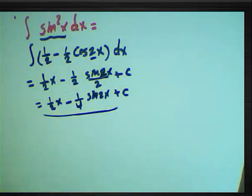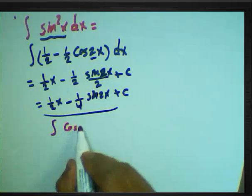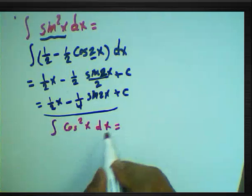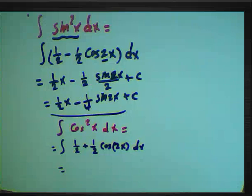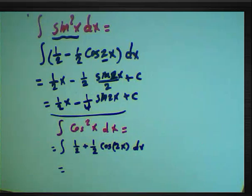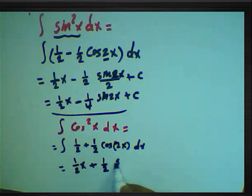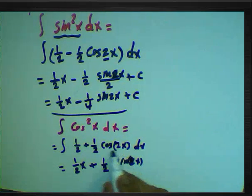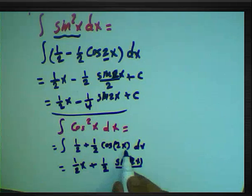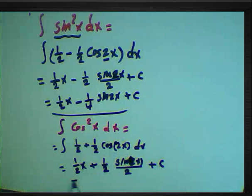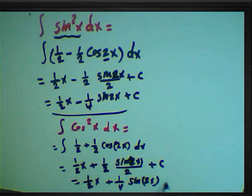What about this example: the integration of cos²(x) dx? We know cos²(x) equals one-half plus one-half cos(2x). The integration of one-half is (1/2)x. Then pulling one-half outside, the integration of cos(2x) gives sin(2x) divided by the derivative of the angle 2x, which is 2. The result is (1/2)x plus (1/4)sin(2x) plus constant.